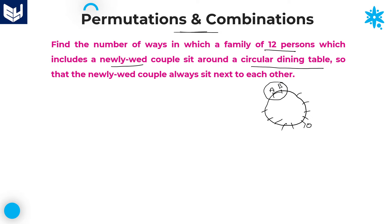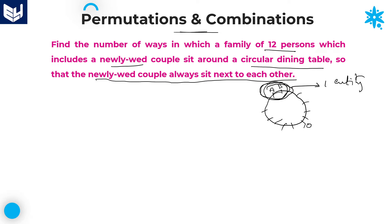Now, the condition is very important: the newly wed couple must always sit next to each other. These two members are always sitting next to each other, which means you need to take these two members as a single entity. If you are not taking them as a single entity, it is possible to split them in another way. So in order to make these two members always sit next to each other, we have to make them a single entity.